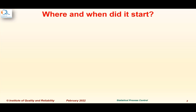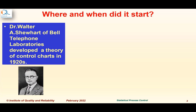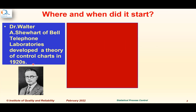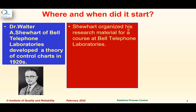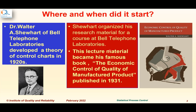Where and when did SPC start? Dr. Walter Shewhart of Bell Telephone Laboratories developed a theory of control charts in the 1920s. Shewhart organized his research material for a course at Bell Telephone Laboratories. This lecture material became his famous book, The Economic Control of Quality of Manufactured Product, published in 1931 — a book that is still available today.